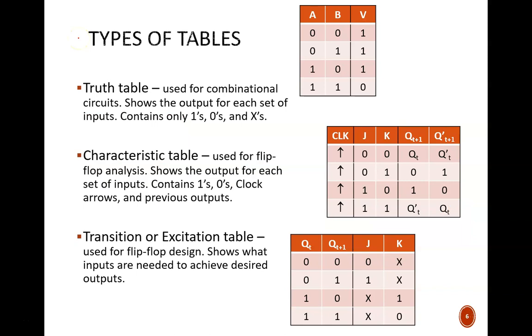We now have three different types of tables used in this course. Truth tables, characteristic tables, and transition tables. These can get easily confused, so let's take a minute to distinguish between them.